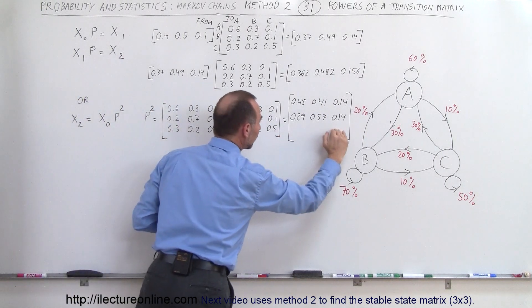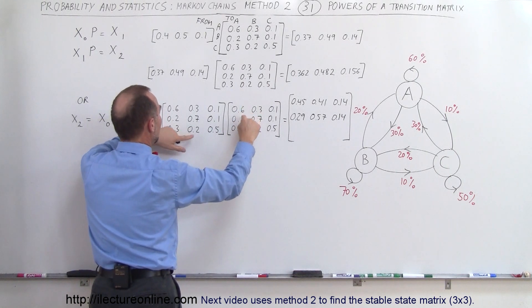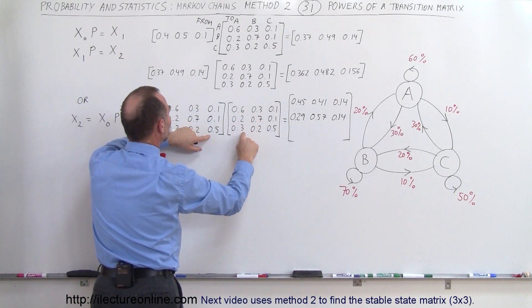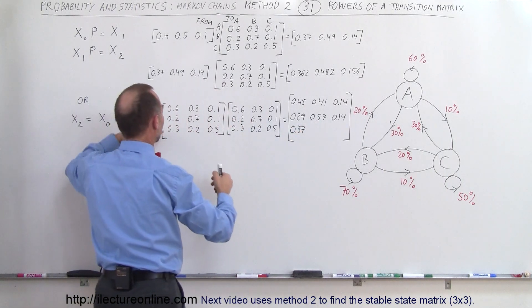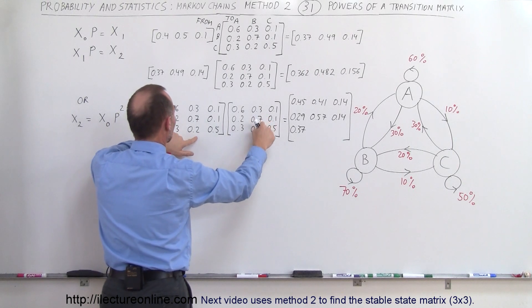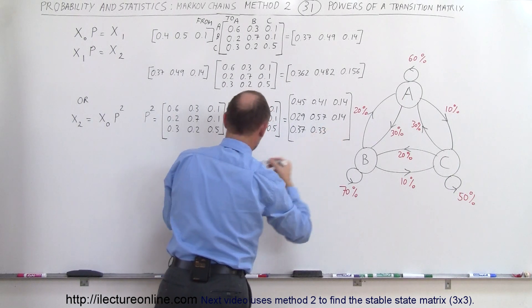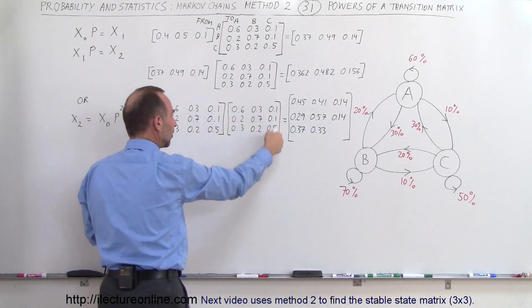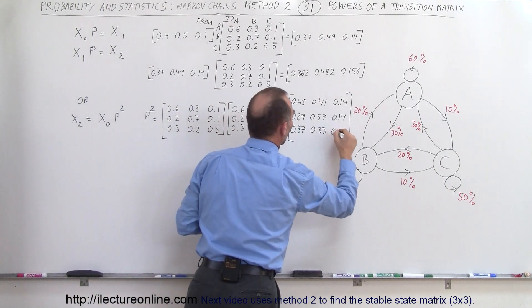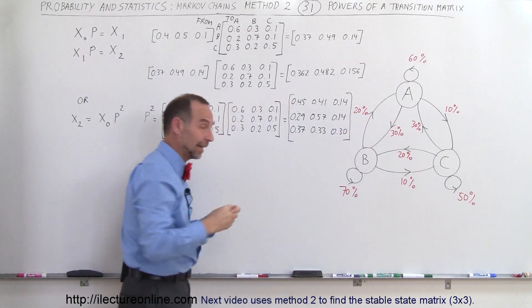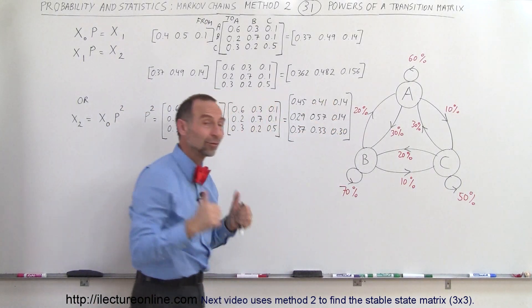For the three elements of the third row, we multiply the third row times the three columns. That gives 0.37 for the first element, 0.33 for the second, and 0.30 for the third. Adding these together: 0.37 + 0.33 + 0.30 = 1.00. That is correct. So we now have the full P² matrix.